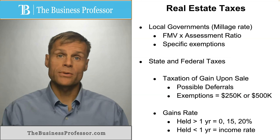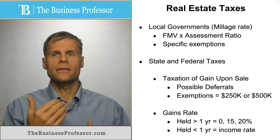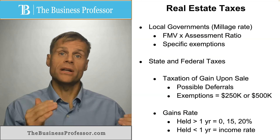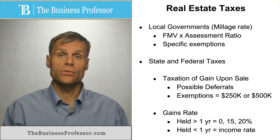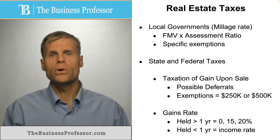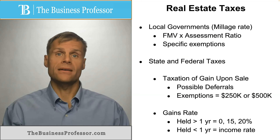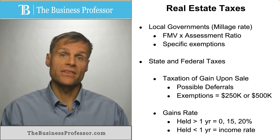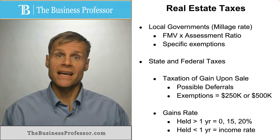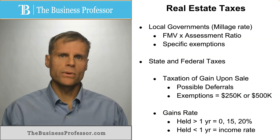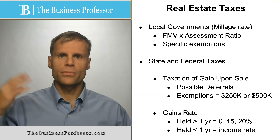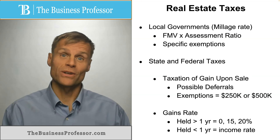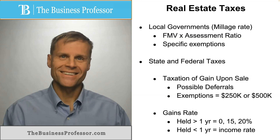The long-term capital gains rate can be 0%, 15%, or 20% depending on your income level. If you have very low income, you may not be subject to any taxation on that gain. Most people are subject to either 15% or 20% based upon the amount of income they earn separate from the sale of that asset. In summary, local taxes are based upon the value of the property, and state and federal taxes are based upon any gains realized from the sale or disposition of that property.